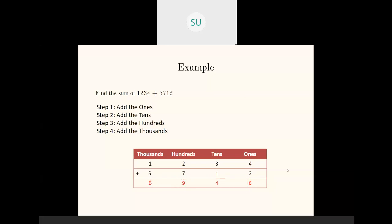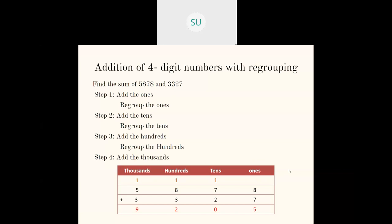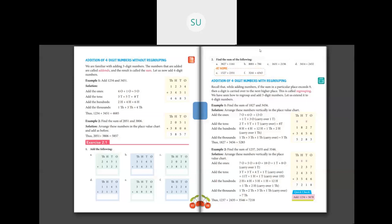Next we have addition of 4-digit numbers with regrouping. But first we will solve the questions on page 97 on addition without regrouping. Question A: the numbers are already in place value format. Add the 1's place: 1 plus 3 is 4. Then 3 plus 2 is 5. Then 4 plus 3 is 7. And 2 plus 1 is 3. So the first answer is 3,754.